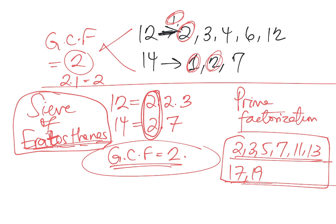These numbers are only divisible by themselves and 1. Keep in mind that 1 is not a prime number — it's neither prime nor composite. On the ACT exam, one common question is: what prime number is also even? The answer is 2 — it's the only number that is both prime and even.